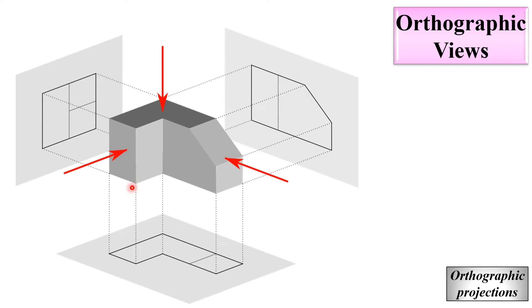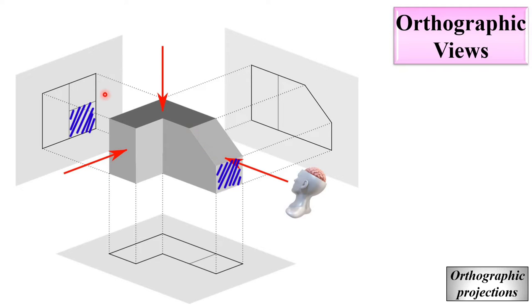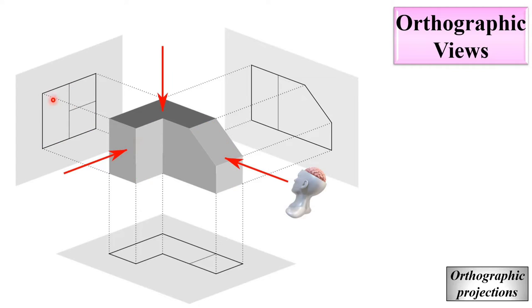Now, see this is another object to understand the imagination of orthographic projection. If you see from this direction, then you can see this plane, this plane, and this plane. So, from the front side, you can see these three planes.